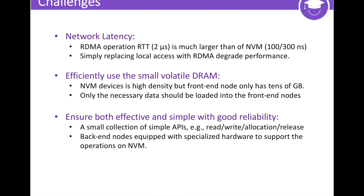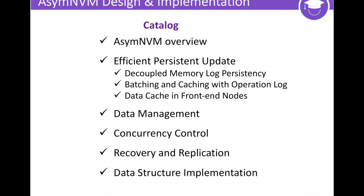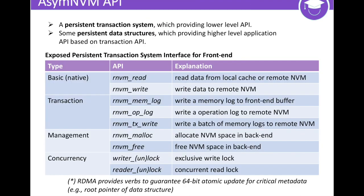Specifically, the back-end should be only responsible for performing a small collection of simple APIs, such as remote memory read-write allocation, block acquire-release, and so on. This table illustrates the APIs of SMNVM. The first set of APIs provides a transactional interface that allows the front-end to push a list of update logs to the back-end to achieve persistency. The second set of APIs handles memory management, which includes remote memory allocation and releasing. The third set of APIs deals with concurrency control with single-writer, multiple-reader support.